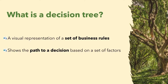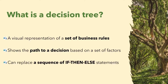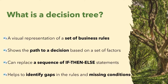Often we start capturing the rules using an if-then-else construct. But if you have more than two or three factors, they quickly become unmanageable. A decision tree can help us make the conditions more clear. At the same time, it will make it easier to see any gaps or missing conditions.